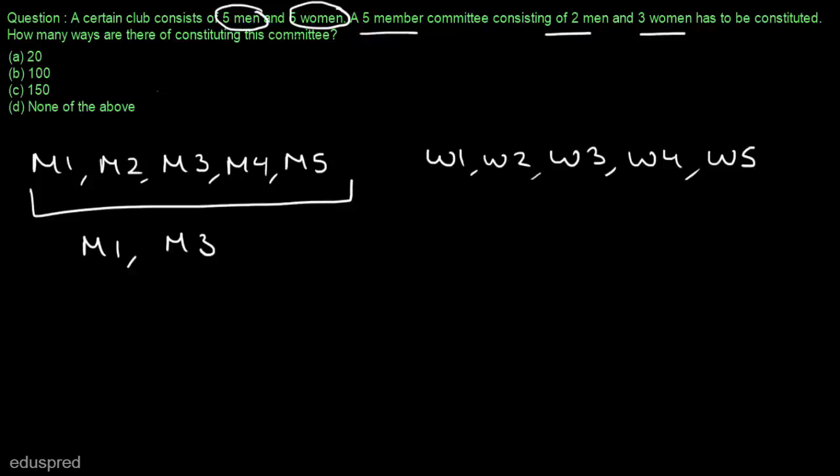Now, let's see how we can select 2 men out of 5 men. We know that this is the case of combination. So we can select 2 men out of 5 men in 5C2 ways. And similarly, we can select 3 women out of 5 women in 5C3 ways.